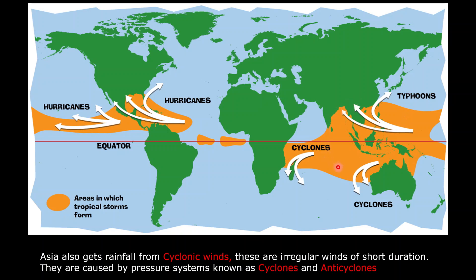Here in this map you can see all those areas of Asia which frequently get affected by cyclones. The eastern and southern part of India, parts of Bangladesh, Myanmar, Philippines, eastern China, and southeastern Asia are all affected very badly practically every year due to cyclones.